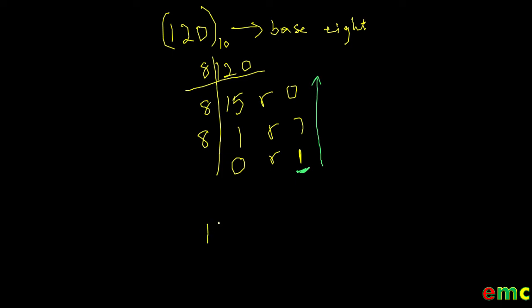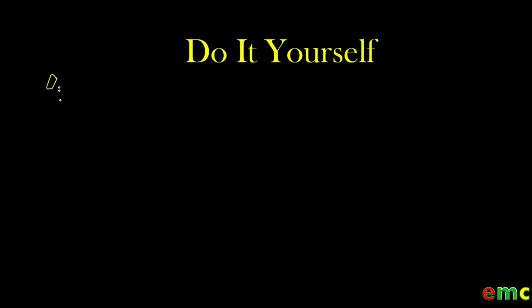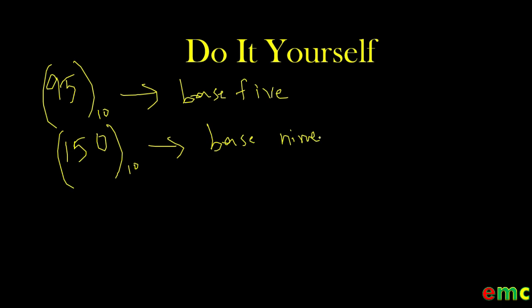Therefore, 120 in base 10 is equal to 170 in base 8. It's very easy. Don't forget to give this video a like and click on the subscribe button. In today's do-it-yourself section: convert 95 in base 10 to a number in base 5; and convert 150 in base 10 to a number in base 9. Don't forget to give this video a thumbs up. In our next video we'll be doing conversion from other bases to decimal. Thank you.